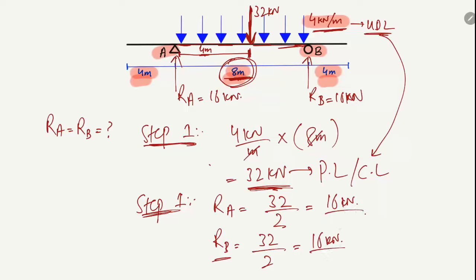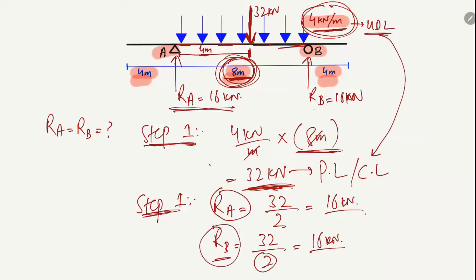This is a very simple and easy method to find the support reactions for an overhanging beam. In step one, multiply the uniformly distributed load with the length on which the load is distributed — here it was 4 kN/m × 8 m = 32 kN. In step two, divide this pointed load by two to get RA and RB. Hope you guys understand — don't forget to subscribe to our channel. Thank you for watching.